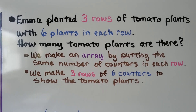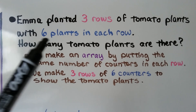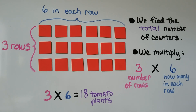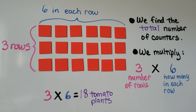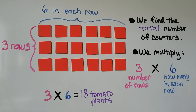Emma planted three rows of tomato plants with six plants in each row. How many tomato plants are there? We make an array by putting the same number of counters in each row — three rows of six counters for the six plants in each row. Three times six is equal to 18 tomato plants.